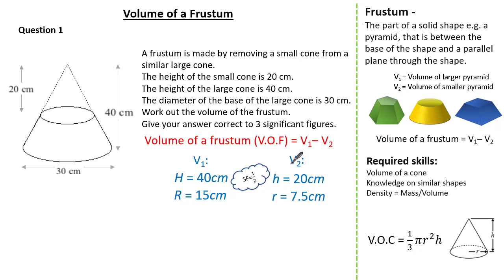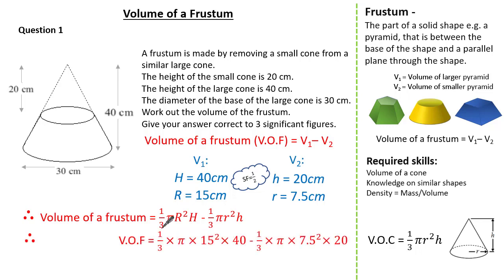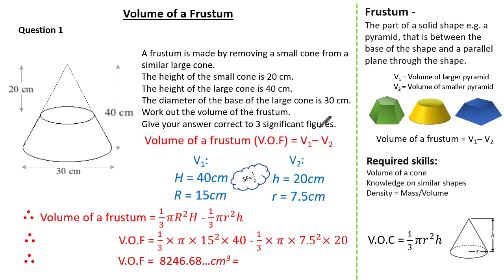From here we simply substitute into our formula. The volume of our frustum is the volume of the larger cone subtract the volume of the smaller cone. Substituting what we know: one-third times pi times 15 squared times 40, subtract one-third times pi times 7.5 squared times 20, gives us a volume of 8246.68... Given the question wanted us to round to three significant figures, our answer is 8250 cm³.